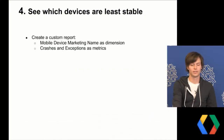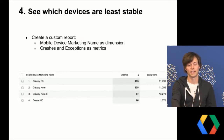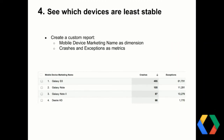To create this custom report, I used mobile device marketing name as the dimension, crashes and exceptions as the metrics, and then you get a pretty clean report showing crashes per device.